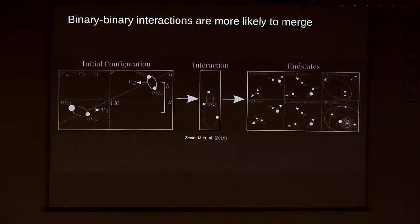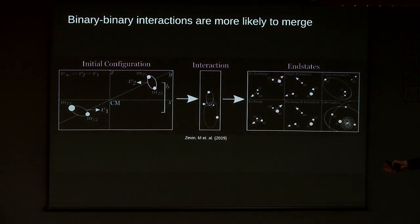This is a binary-binary interaction, studied in scattering experiments. It's been shown that even though they are less likely—because there are usually more stars not in binaries than in binaries—those binaries produce much more mergers. They're more likely to produce mergers, so even if they're less likely to happen overall, they produce more mergers. To recap, we're arguing that this under-prediction of mergers at low cluster masses is due to binary-binary interactions.